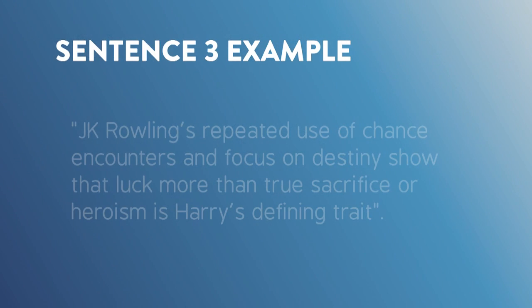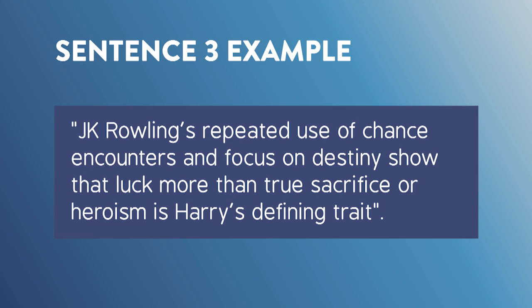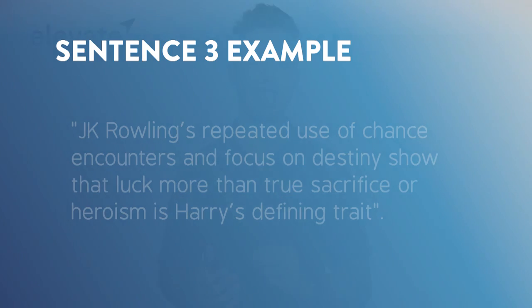In sentence three, I say: 'JK Rowling's repeated use of chance encounters and focus on destiny show that luck, more than true sacrifice or heroism, is Harry's defining trait.' This is where the meat of my contention is. I build upon the previous two sentences and explain exactly what I mean — that it's luck, not sacrifice or heroism, that defines Harry. Here I've made it clear that he's just lucky and that true heroes are not the ones that are lucky; they require something more.